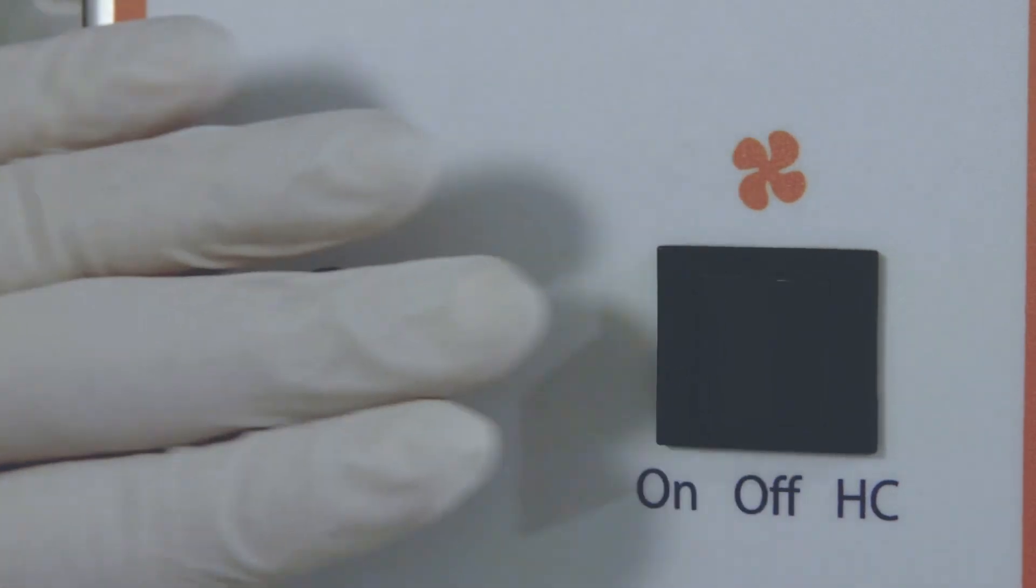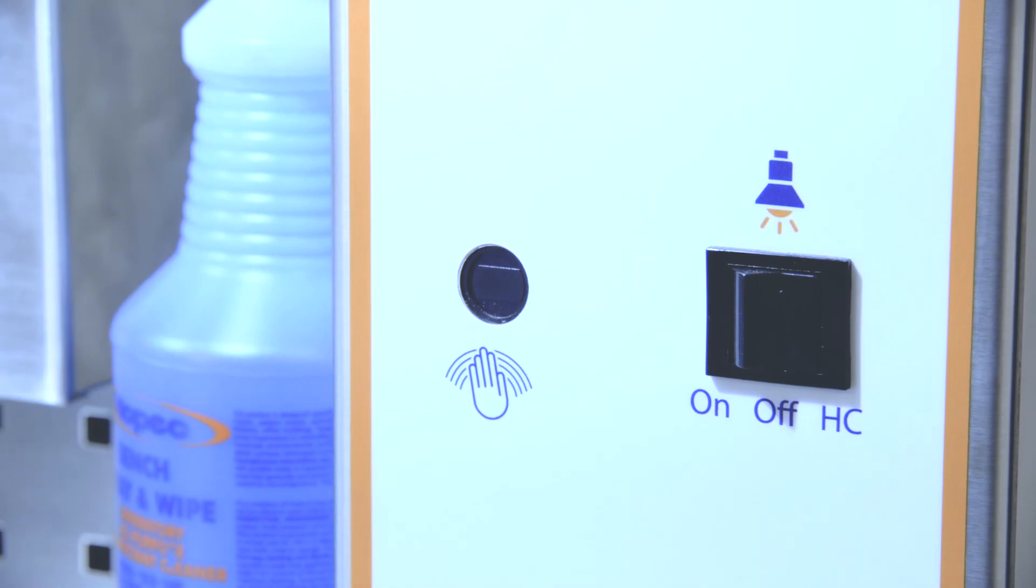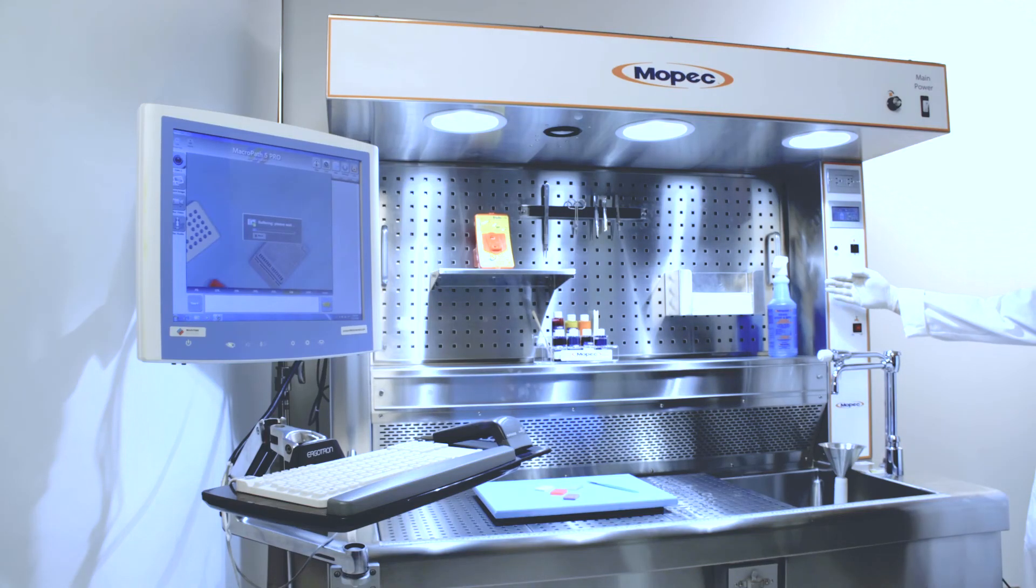The unit is also equipped with a proximity sensor that powers down to save energy and add longevity to fans, motors, and LED lights when the station is not in use.